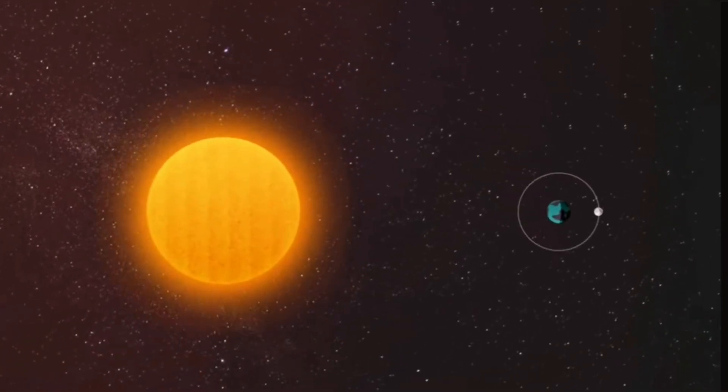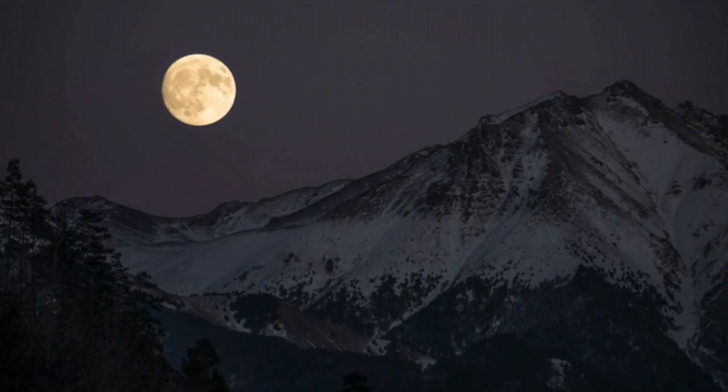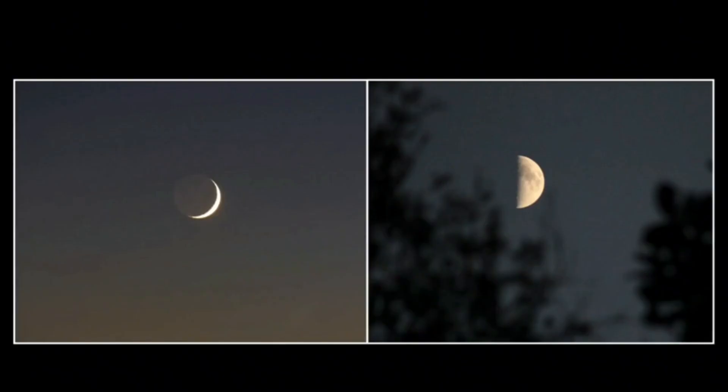Wait a minute, what is happening here? Before we move further into the video, let me tell you something about the Moon. You might have seen the Moon in different shapes. Sometimes it is full, sometimes it is half, or sometimes it is crescent. These are called the phases of the Moon.